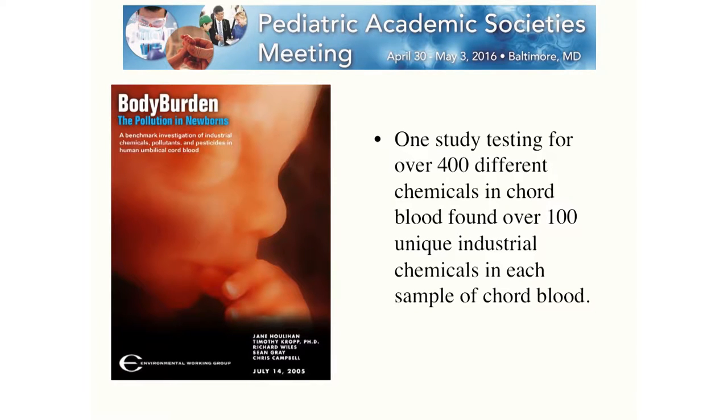It's also important to recognize how much we are exposed to these kinds of chemicals. One study looked for over 400 different industrial chemicals in cord blood and found, on average, over 100 unique chemical signatures in each cord blood sample, with maybe 40 or so chemicals in common among all samples. We certainly have large exposures, and we can show both in vitro and with circumstantial evidence in humans that these chemicals can interfere with hormone action during development when we really can't afford it.